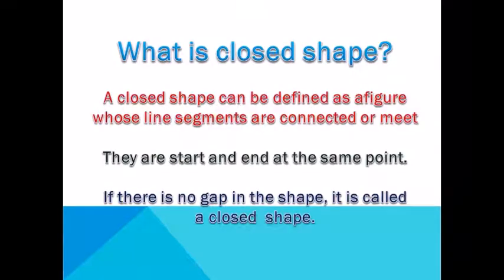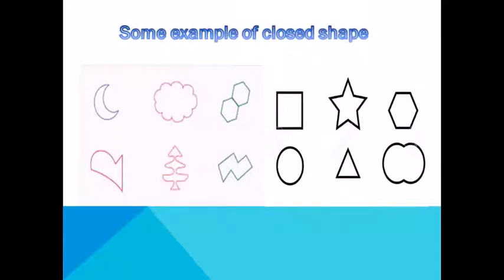Now, what is a closed shape? A closed shape can be defined as a figure whose line segments or curved lines are connected or meet. They start and end at the same point. In simple words, we can say, if there is no gap in the shape, it is called a closed shape. Here are some examples of closed shapes.